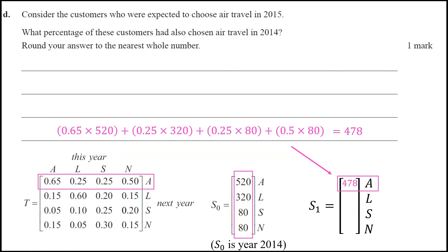So we can go ahead and do that. You could either do that as a matrix multiplication, like typing the whole thing in and looking at the first row or just typing out that multiplication for the first row. Because we don't need all the rows. What we do need now is we need to look at how many of those customers would have chosen air travel in 2014. So where would they be?